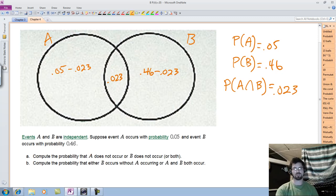Now, they want us to compute the probability that A does not occur or B does not occur. So they want A does not or B does not. Or both. So how am I going to do that? Well, first I need to figure out, shall I show you a trick here? Yeah, I'll tell you a little rule.